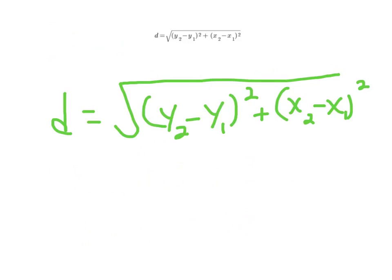For those of you who don't remember what the distance formula is, there it is. d equals y2 minus y1 quantity squared plus x2 minus x1 quantity squared, all that square root. And amazingly enough, it looks an awful lot like the Pythagorean theorem.